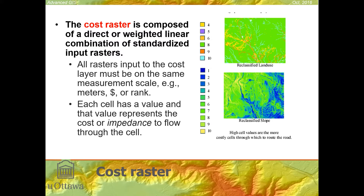Each value in the cost raster represents an impedance to flow through the cell. Think of slope and water flow: water doesn't flow upwards and flows more quickly on a steeper slope than a very shallow slope. Slope itself could be a measure of cost if you were modeling water flow over the landscape, so that each cell would have an impedance based on the magnitude of the slope. The higher the slope, the smaller the impedance; the lower the slope, the higher the impedance to water flow.